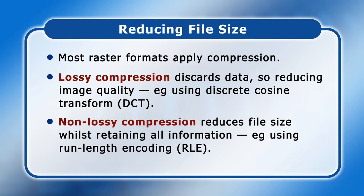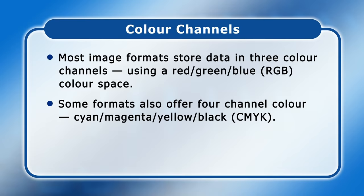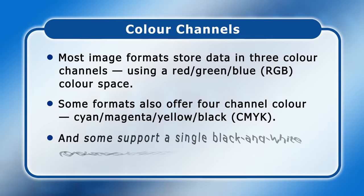Most image formats store data in three colour channels — red, green and blue — or what is described as an RGB colour space. However, for professional printing, some formats also offer four-channel colour using cyan, magenta, yellow and black, or CMYK. In addition, some formats also support a single black and white or greyscale channel.